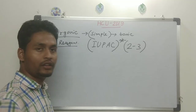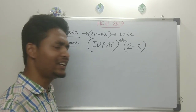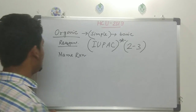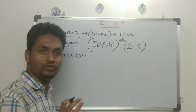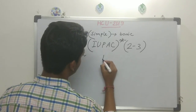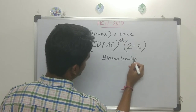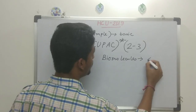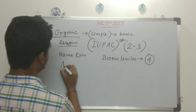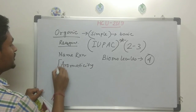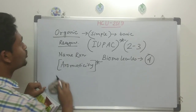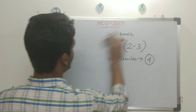Name reactions — you can't avoid them in any exam, whether JAM, BHU, HCU, or CSIR. Any name reaction can come, but the questions will be very basic. From biomolecules as a whole — proteins, amino acids, and nucleic acids — around 4 questions are coming. And aromaticity, which is part of GOC, also gives very common questions every year and should be studied.